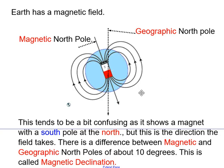The Earth has a magnetic field. It's like having a magnet down the middle. The geographic North Pole is this straight line down the middle. The magnetic North Pole is this one. It tends to be a bit confusing because the bar magnet in the middle, which represents Earth's magnetism, shows the magnet with the South Pole at the North. But this is the direction the field takes. It goes from North to South. There's a difference between the magnetic North Pole and the geographic North Pole of about 10 degrees. This is called the magnetic declination.